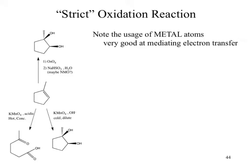Now we'll move into our strict oxidation reactions. These get a bit messy, and you'll notice in almost all of these that we see a very heavy usage of metal ions. Metals are fantastic because they are very good at transferring electrons — that's why we use them in our walls to transfer electrons. When we do an oxidation reaction, we lose electrons. Something has to accept those electrons — very typically, our metal.